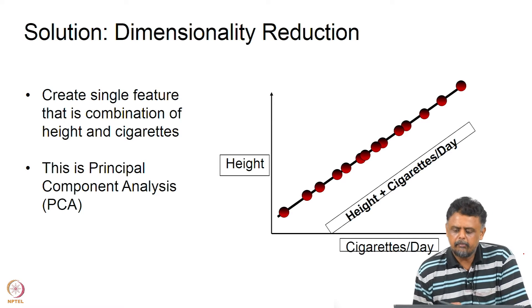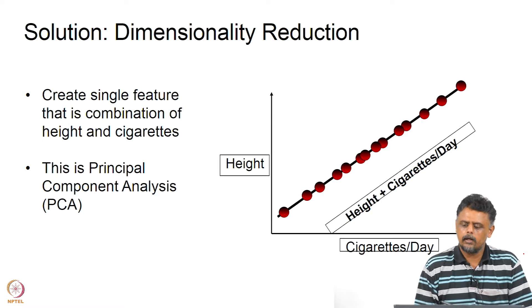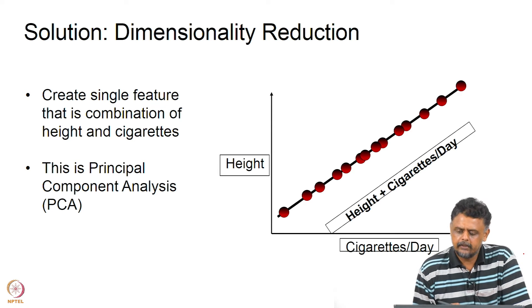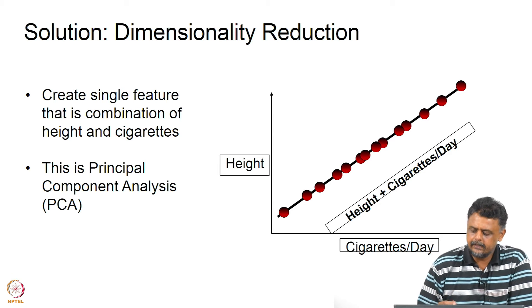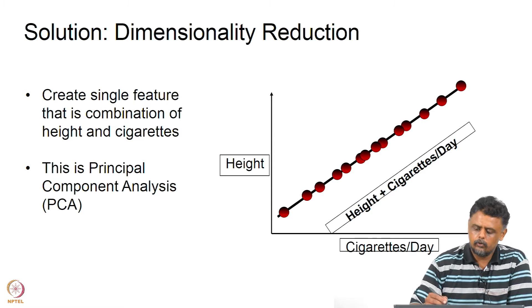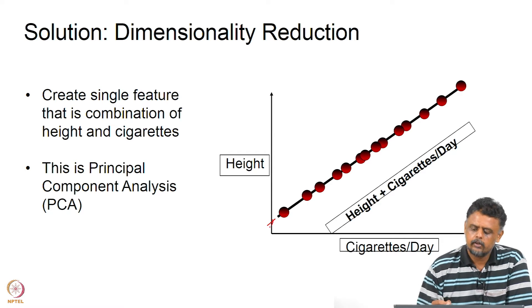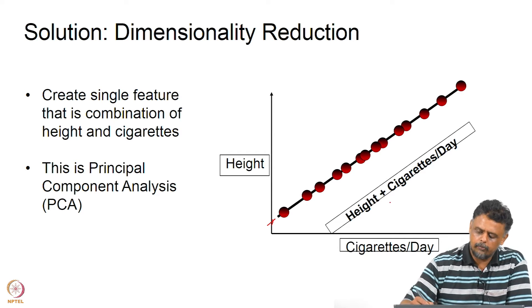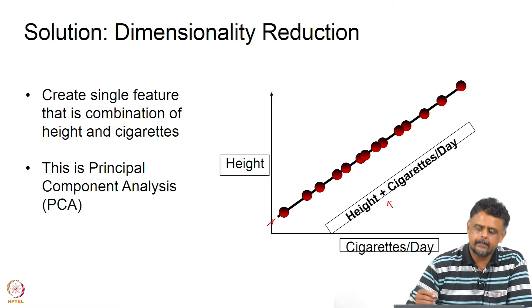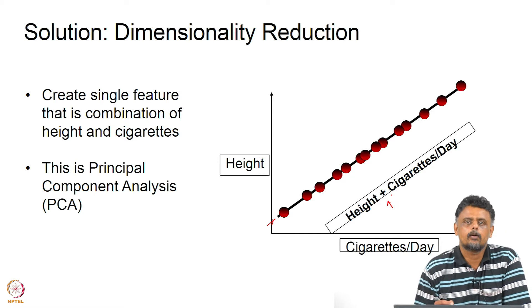So that is what we have done. We have managed to project our data which is of two columns — containing height and cigarettes per day — into a single axis. So you can think of it as some combination of height and cigarettes.